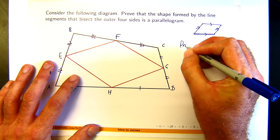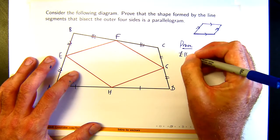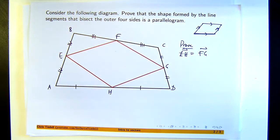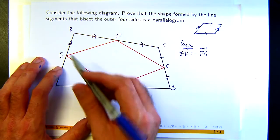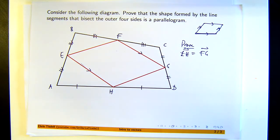So how do I do it? Well, remember that when we're adding and subtracting vectors, we use things called the triangle or parallelogram rule. And when vectors are parallel, they're just a multiple of each other. So let's say I'm going to prove EH equals FG. So this vector here is equal to this vector here. That's what I'm trying to do.